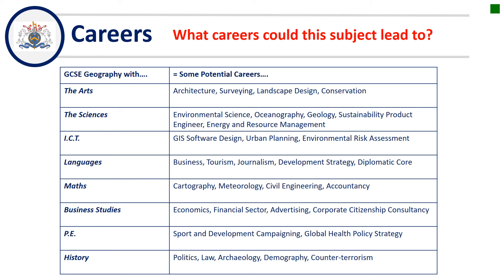For example, the sciences and geography — a lot of physical geography is very science orientated, leading to environmental science, oceanography, geology, and energy and resource management. ICT is of course a huge job sector these days, covering GIS software design — that's geographical information systems, think Google Earth — urban planning, and environmental risk assessments. If you're good at languages and have a geography qualification, that could lead you into tourism, journalism, or working in the diplomatic corps. And mathematics links to cartography — the making of maps — and meteorology, the study of weather. So there are all sorts of jobs and careers that geography leads to. It's a very wide ranging subject.